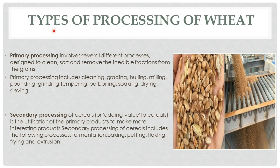Now we're going to discuss the types of processing of wheat. First is primary processing. It involves several different processes designed to clean, sort, and remove the inedible fractions from grains. Primary processing includes cleaning, grading, hulling, milling, pounding, grinding, tempering, parboiling, soaking, drying, sieving, and so on.